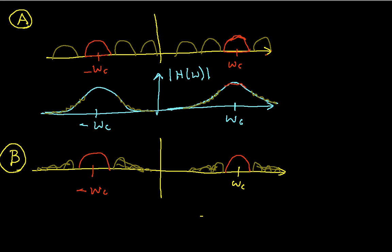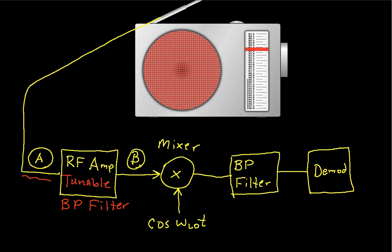And now, I need to look at what happens in the mixer. So, what comes out of the mixer? To do that, you can see that what the mixer does is it multiplies my signal at B by cosine omega LO t.